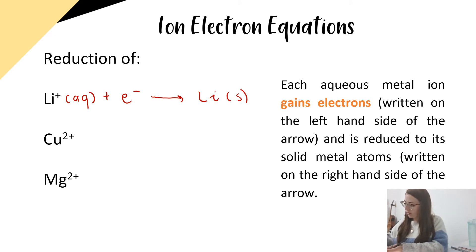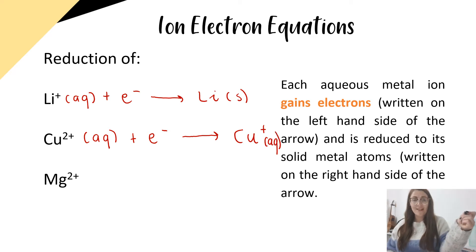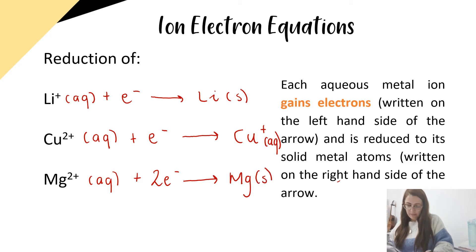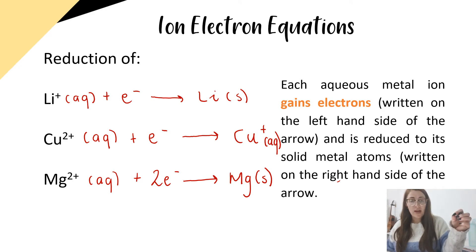For copper two plus ions, we look up copper two plus in the data booklet: copper two plus aqueous plus an electron gives us copper plus ions. And lastly, magnesium two plus — if we look up magnesium two plus on page 12, magnesium two plus would gain two electrons to become magnesium metal, magnesium solid. So it's as easy as looking up these ions or atoms on page 12 of the data booklet and copying the oxidation or reduction reaction for that compound.